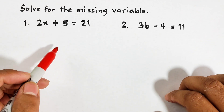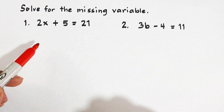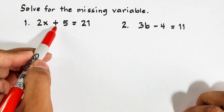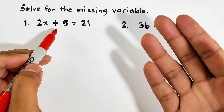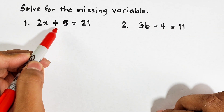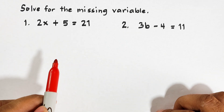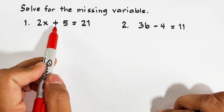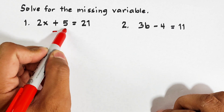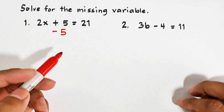What must be the value of x in this equation? The first step we need to do is to eliminate plus 5. From our previous video, to eliminate plus 5 we need to use its inverse operation. If this is plus 5, what we need to do is subtract 5, and to balance the equation